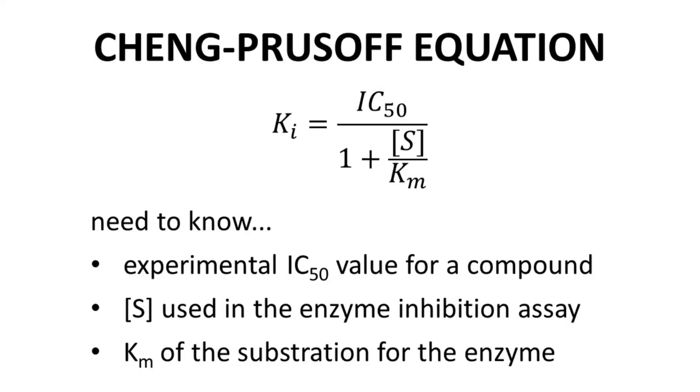The Cheng-Prusoff equation allows conversion of an IC50 value of an enzyme to a KI value. In order to use the Cheng-Prusoff equation, you will need to know the IC50 value of a compound, the substrate concentration used in the enzyme inhibition assay, and the KM, Michaelis constant, of the substrate for the enzyme.